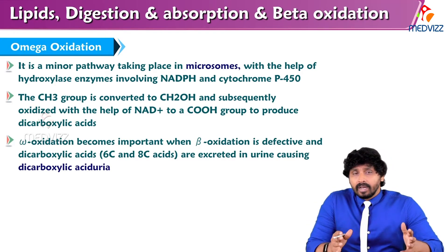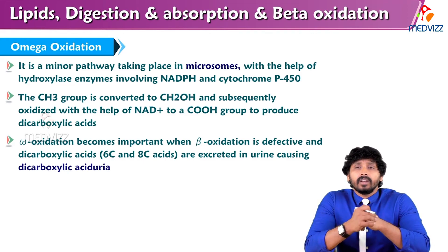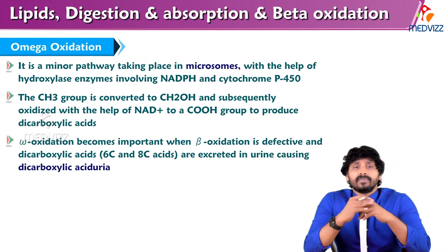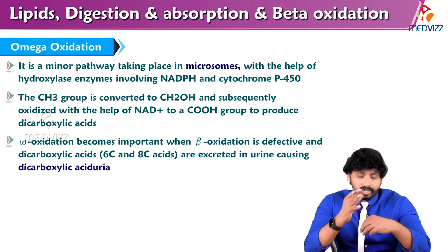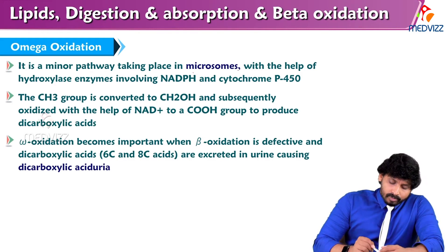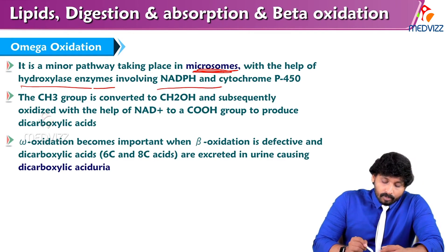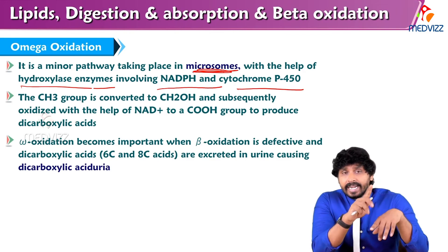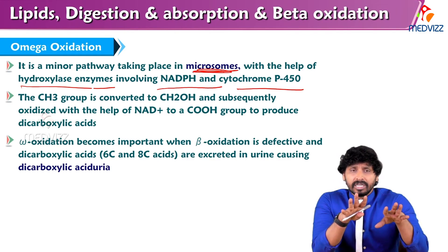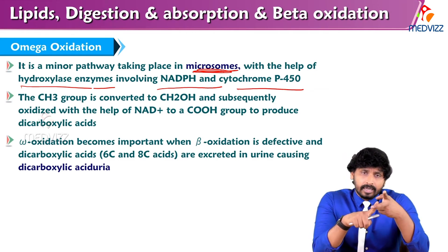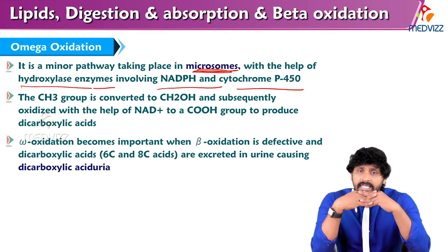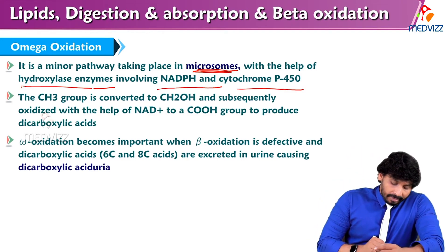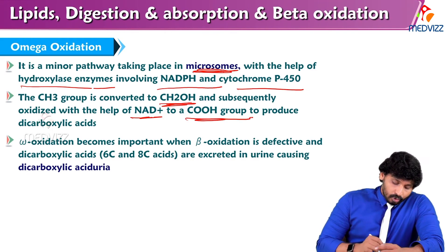Omega oxidation is also a pathway. We have seen omega-3 and omega-6 fatty acids in the market as tablets or pills — how these omega fatty acids undergo oxidation to provide energy is called omega oxidation. It is a minor pathway taking place in microsomes with the help of hydroxylase enzymes involving NADPH and cytochrome P450. Remember: beta oxidation requires NAD and FAD; alpha oxidation mostly doesn't require reducing equivalents. But in omega oxidation we require NADPH and, because it takes place in microsomes, cytochrome P450 as well. The methyl group is converted to an alcoholic group and subsequently oxidized with NAD+ to form a carboxylic group (COOH), producing dicarboxylic acids.